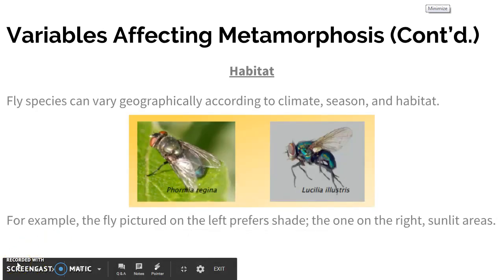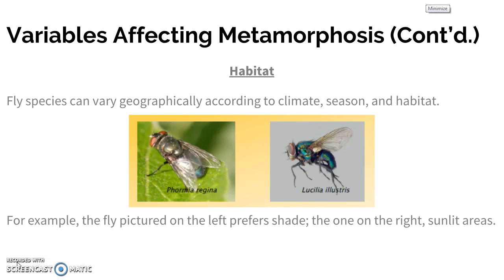Habitat is another variable. There are specific species that prefer specific places on earth. For example, these two flies each prefer a specific climate or habitat — the fly on the left prefers shade, and the one on the right likes sunlit areas. So if you find the one that likes shade and the body is in full view of the sun, you know that when that fly arrived, it was dark or in the shade at some point.